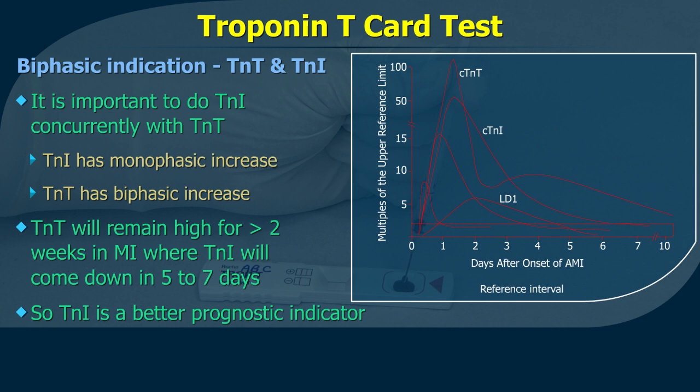Biphasic indication – Troponin T and Troponin I: It is important to perform Troponin I concurrently with Troponin T. Troponin I has a monophasic increase, while Troponin T has a biphasic increase. Troponin T will remain elevated for more than 2 weeks in myocardial infarction, whereas Troponin I will come down in 5–7 days. Therefore, Troponin I is a better prognostic indicator.